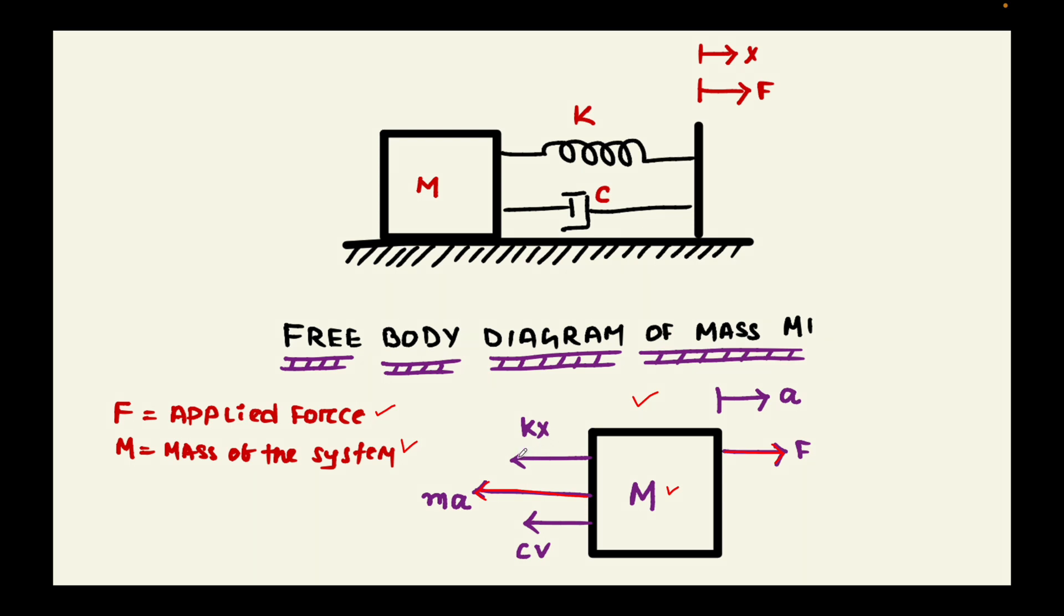Along with that we have two more forces attached, which is the spring force KX where X is the displacement and K is the spring constant. Then we have force due to the damper where C is the damping constant and V is the velocity. Using this free body diagram we need to create a system equation.